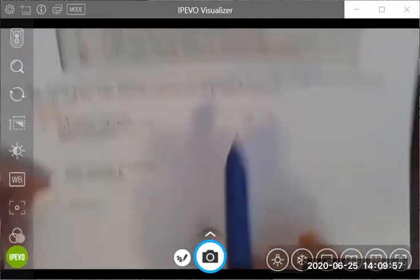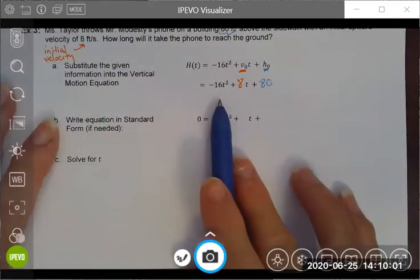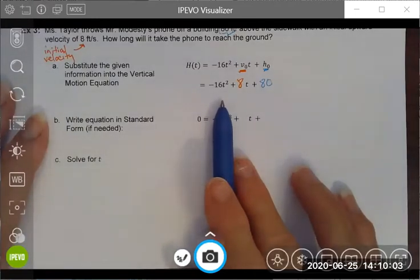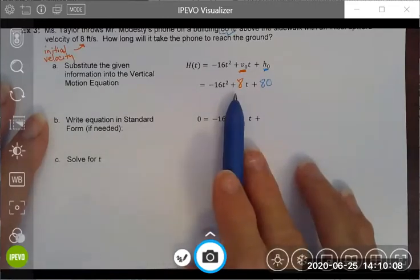From here, if I want to figure out what time or after how many seconds will the phone hit the ground, I'm going to need to use the quadratic formula.